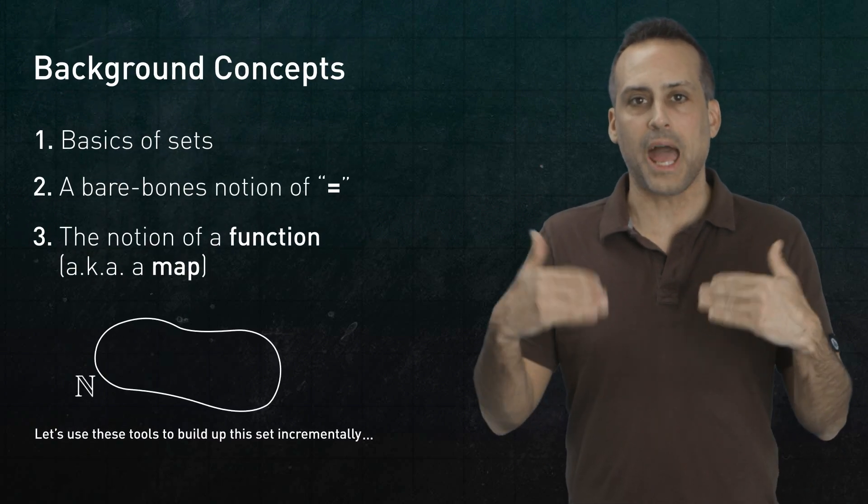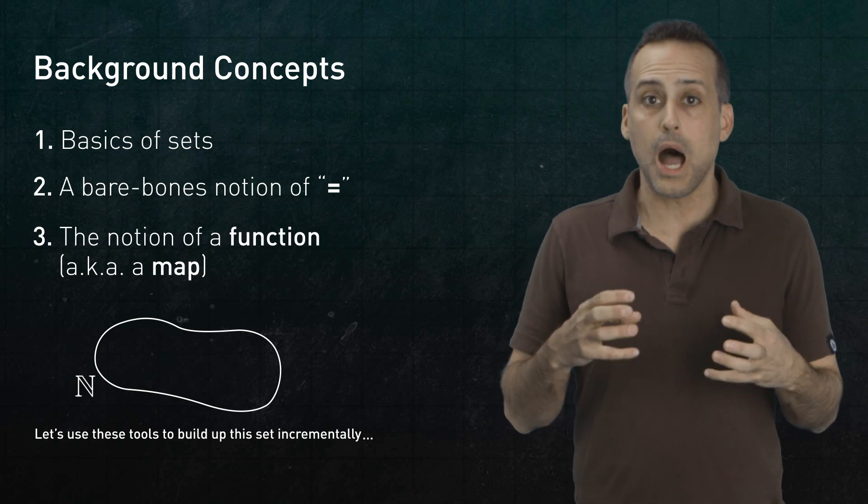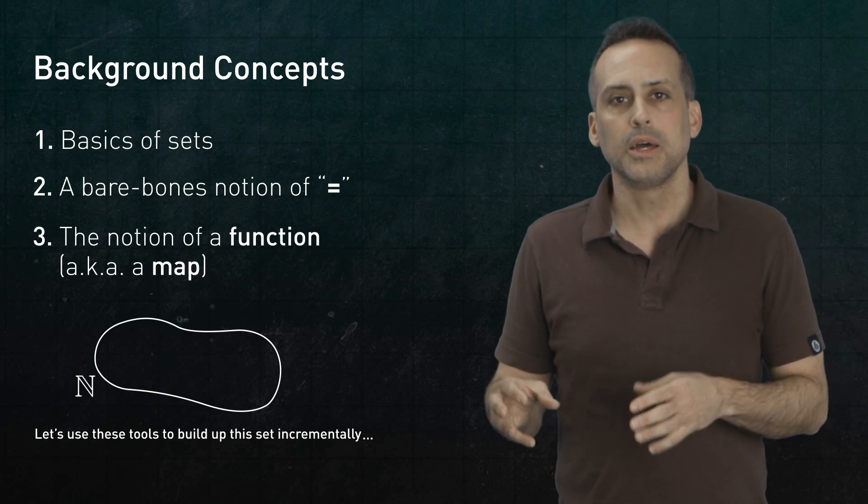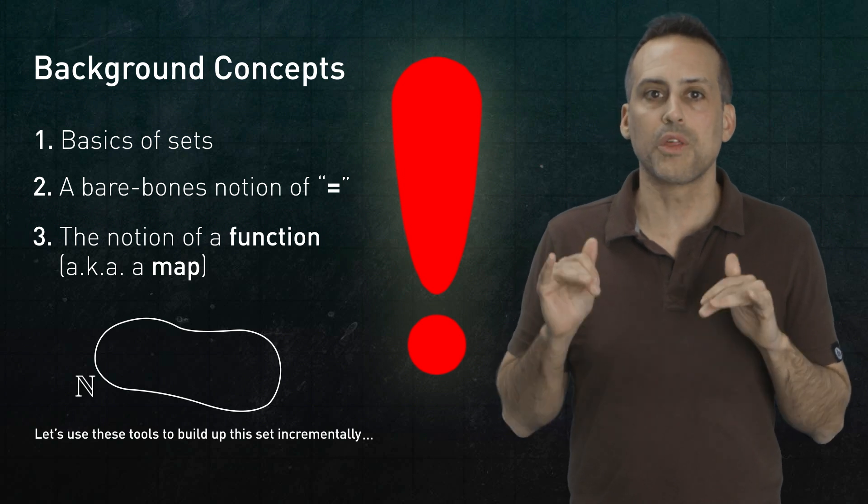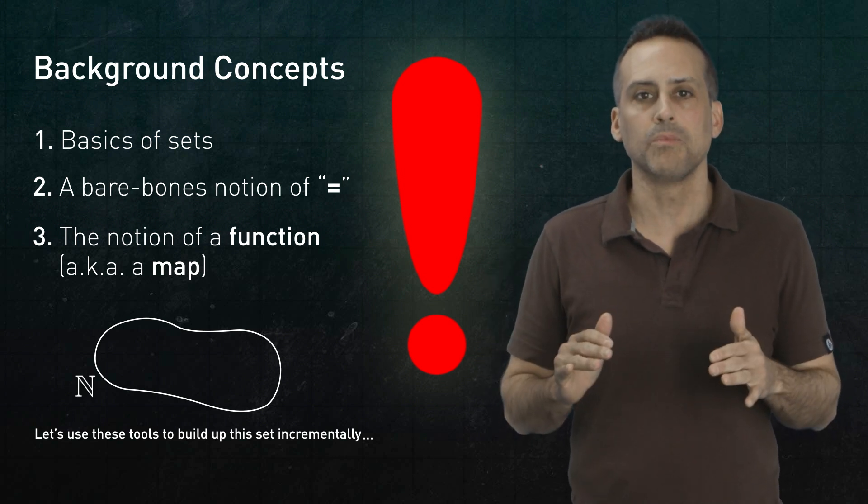Armed with these basic tools, let's introduce Peano's axioms incrementally, so that you can see exactly why each one needs to be there. Now, warning, some parts of the argument are subtle. And you may need to watch this more than once to keep up with what's going on. Let's begin.